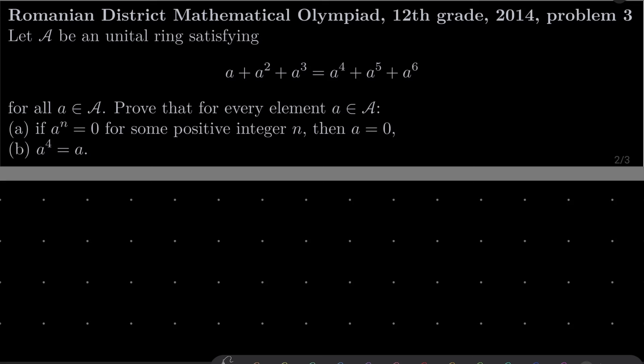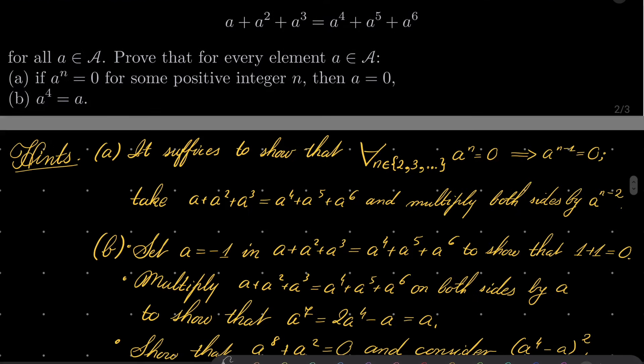Here are my hints. First, part A. It suffices to show that for every natural number n greater than or equal to 2, if A to the power of n is 0, then A to the power of n minus 1 is also 0. After showing that, take our equation which we assume to be true and multiply on both sides by A to the power of n minus 2.